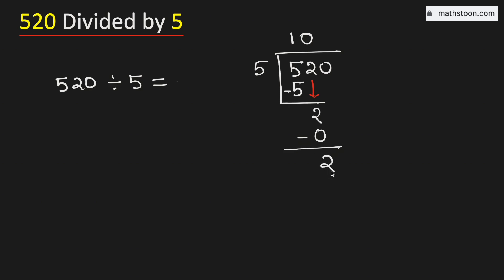In this case, see that 2 is less than 5. But as we have a number to bring down here, so we will bring down that number, which makes it 20. And we know that 5 times 4 is 20.